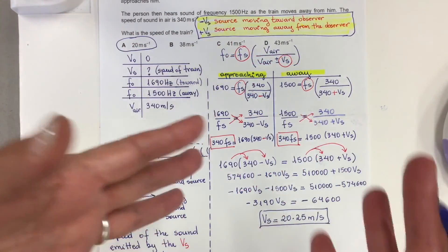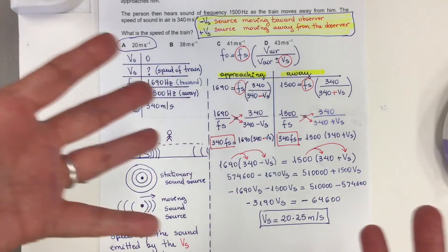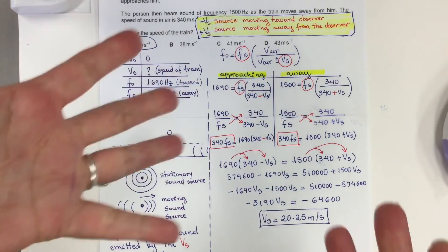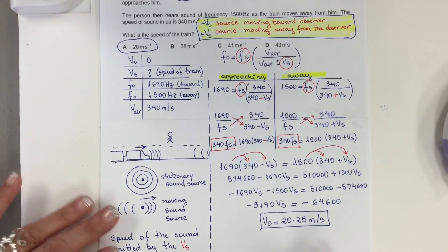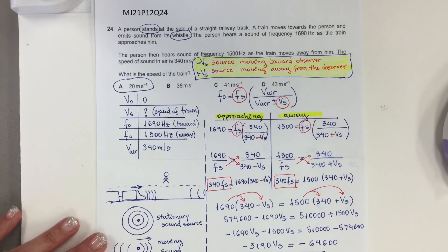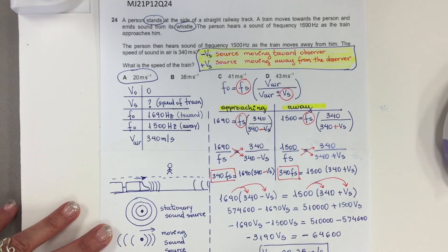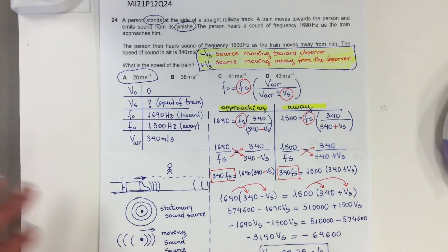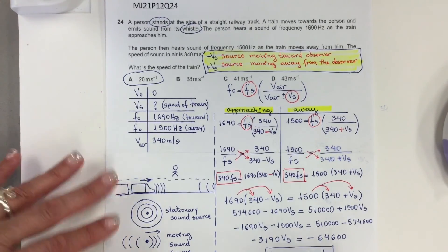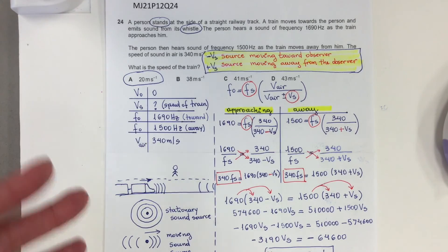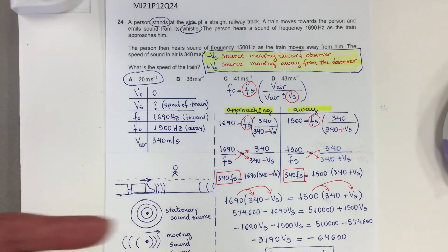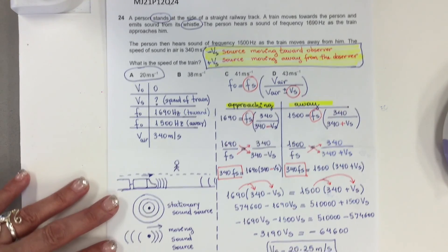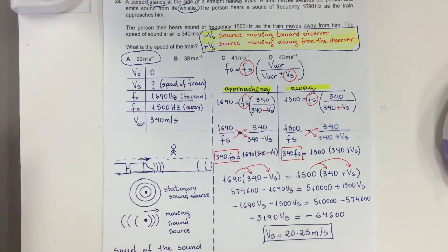This portion is just algebraic rearrangement to solve the problem. This is a fairly involved answer for a multiple choice question, but if you already have an idea how to approach it, hopefully this video is helpful. That is the complete sequence.